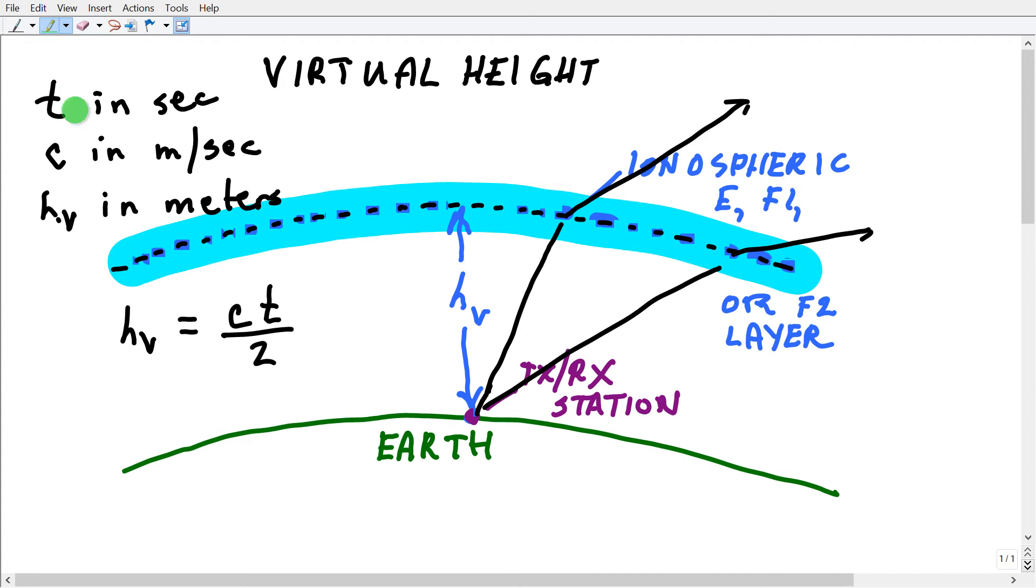So that's what virtual height means. It means the effective or the apparent height. And that's always a little bit greater than the lowest level of ionization with respect to the Earth, because the signal, as it goes up into the ionosphere, has to turn around and come back. It isn't literally reflected like it would be off of a mirror. That's what happens with all signals in the ionosphere. They're not reflected per se, although we may use that term. They are refracted.